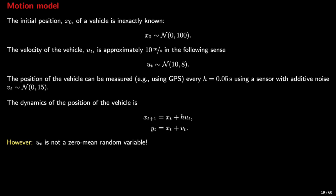The velocity of the train is approximately 10 meters per second, in the sense that it follows the normal distribution with a mean of 10 meters per second and the variance of 8 squared meters per squared seconds. The position of the vehicle, of the train, can be measured, for example using a GPS, every 0.05 seconds, and the measurements come with an additive noise. This is normally distributed and has a zero mean and a variance of 15 squared meters.